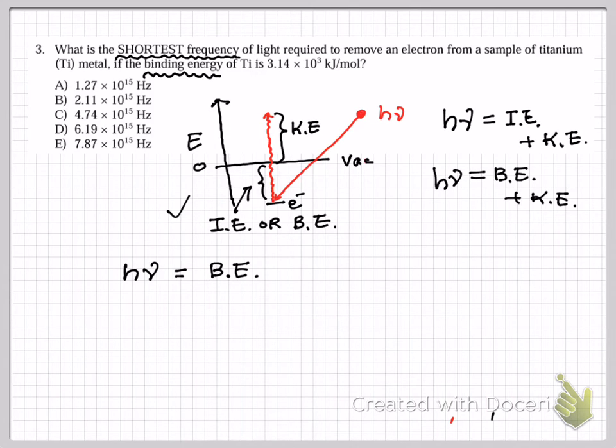There will be extra energy - it will be kinetic energy. But the question is shortest frequency, that means the smallest energy possible. Therefore, hν = B.E. is the equation we're looking for.